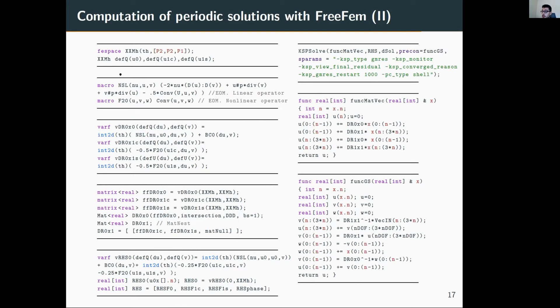We define a series of macros for the linear and non-linear operators. Here we introduce the divergence, convection term, and streamlines. Then we define the variational form of each block. For instance, here I only define the first row of the matrix because of space limitations. We define a FreeFEM matrix from the variational form, then transform it to a PETSc matrix.